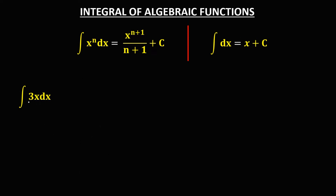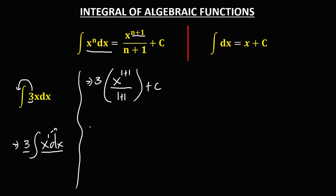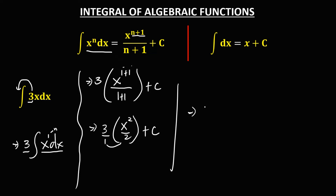For this given, we need to put the constant outside the integral. So this becomes 3 times the integral of x dx. Using this formula, n is equal to 1. So we have x to the power n plus 1, that's x to the power 1 plus 1, over 1 plus 1, plus c. Simplifying: 3 times x to the power 2 over 2, plus c. Therefore this becomes 3 over 2 times x to the power 2, plus c.